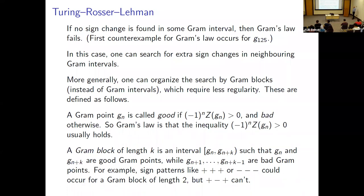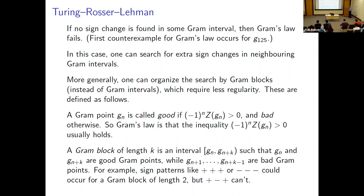Gram's law says there is usually a sign change of Z(t) between two consecutive gram points. If you don't find a sign change in a given gram interval, the natural thing is to look for extra sign changes in neighboring gram intervals. Rasser found it more efficient to organize the search by gram blocks rather than gram intervals.